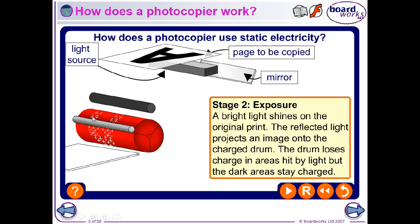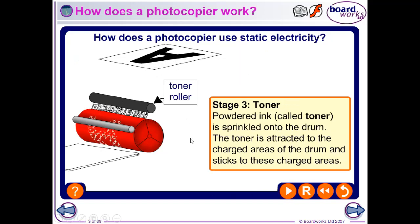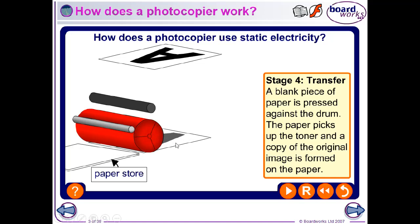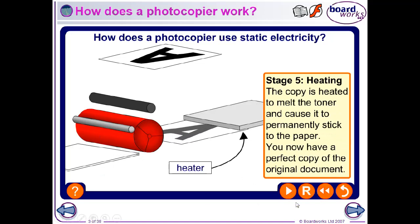Where the drum doesn't get hit by light — the shadow, the image of the letter A for example — it keeps its positive charge. The toner is negatively charged and is attracted from the toner deposit onto the drum where there's a positive charge. So the toner gets pulled onto those positively charged areas of the drum. The toner is then pressed onto a piece of paper, and the heater warms the paper and fuses the toner into it to become print, and the photocopy comes out the other end.